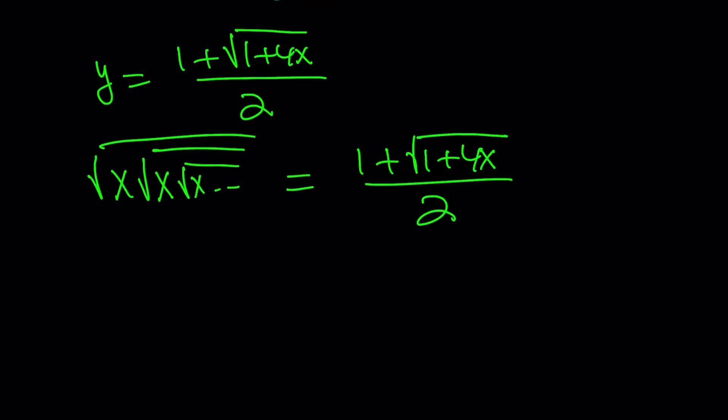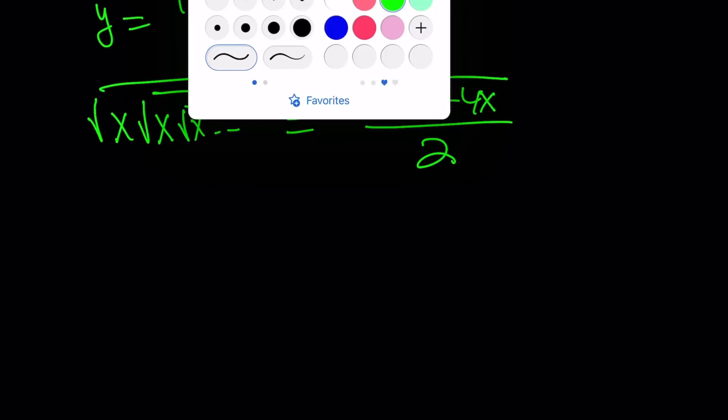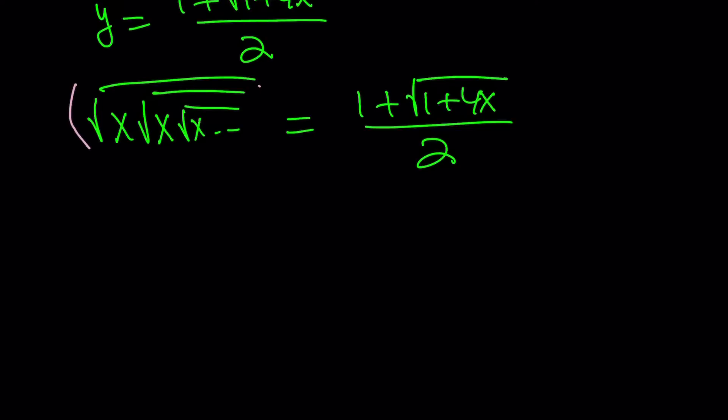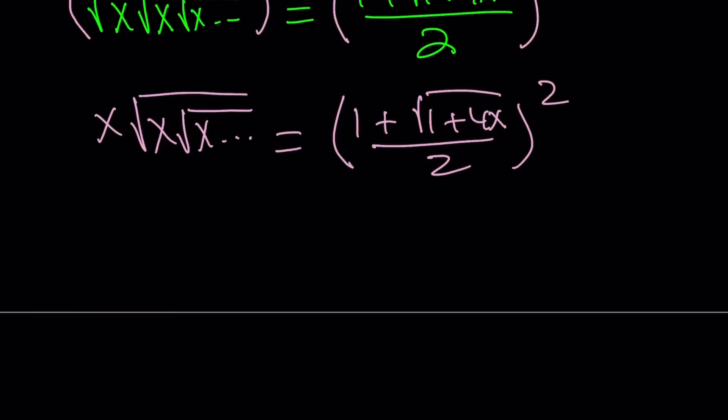Okay? Great. Now, what are we going to do with this? We're going to square both sides. So let's go ahead and square both sides. And that gives us something nicer. x times the square root of x times the square root of x dot dot dot is going to give us the square, this quantity square. Let's leave it at that for now. I don't want to simplify it, because things are going to simplify.